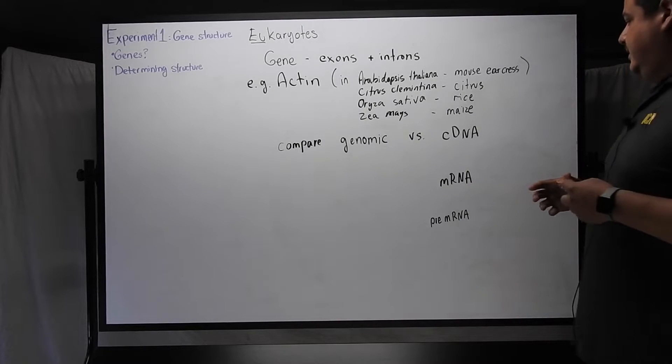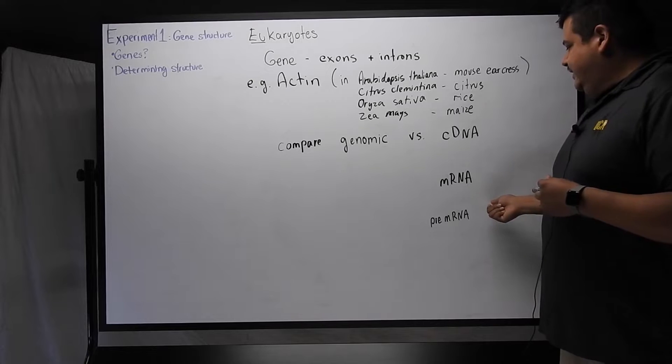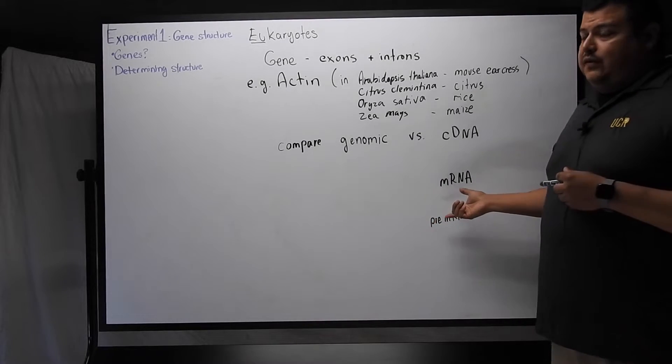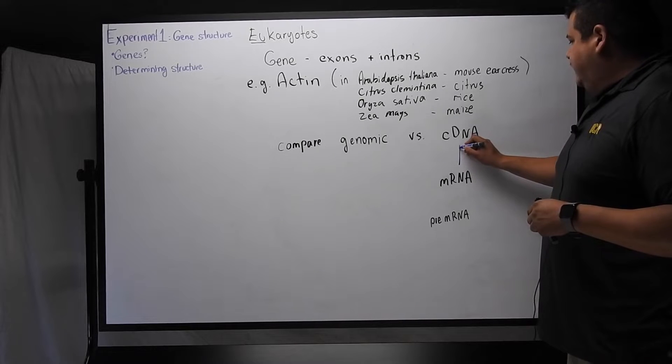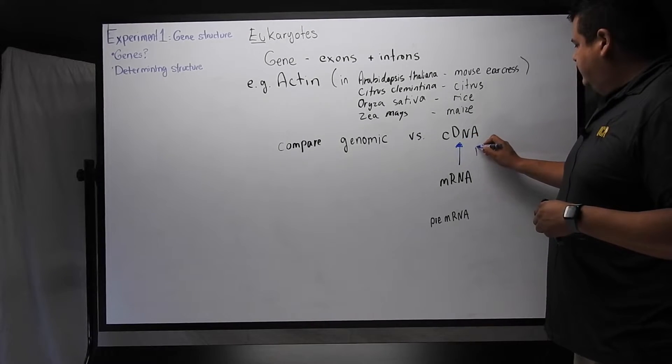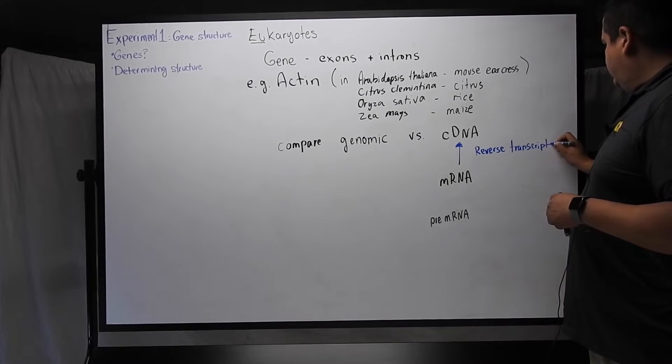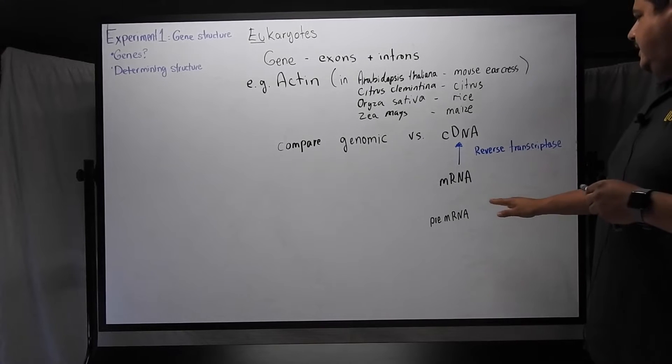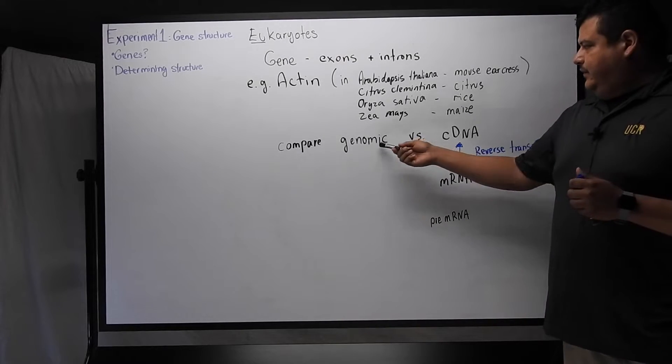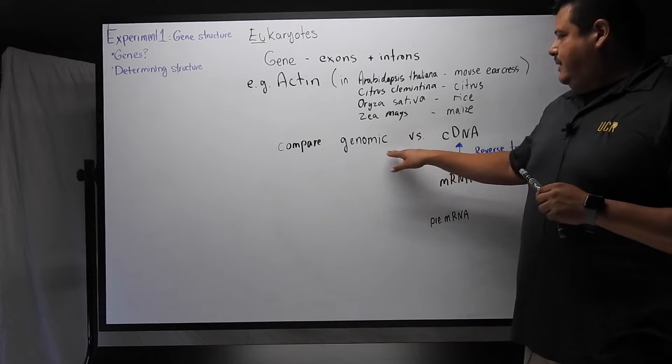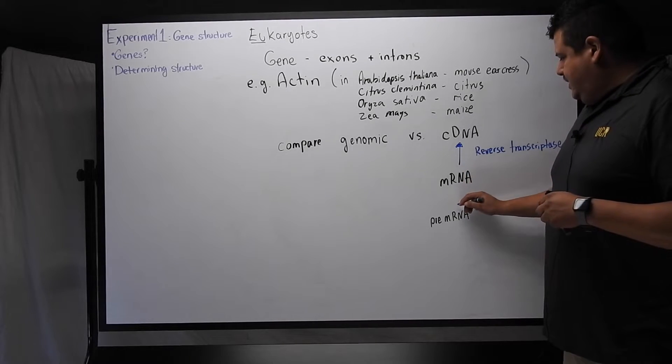So in a lab, we can take tissue from an organism, take tissue from the plant, grind it up, and use different chemicals to isolate the RNA, and then use an enzyme called reverse transcriptase to make a copy of this mRNA in cDNA form. So now you have a direct comparison of two DNA molecules. These are both double-stranded DNA molecules, where the only difference...